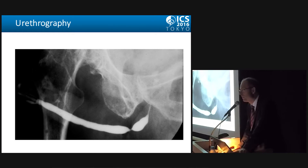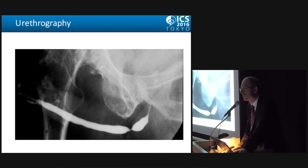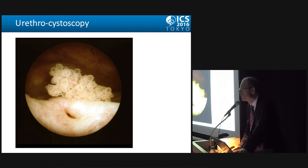Be aware that not every patient with an underlying neurological disease has only the neurological disease causing symptoms. Symptoms may be caused by a urethral stricture — you may consider urethrography — but also urethrocystoscopy, as you will not only detect a urethral stricture but may also detect a bladder tumor or bladder stones.